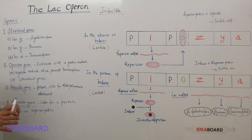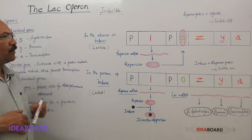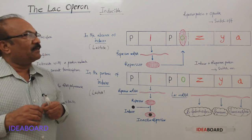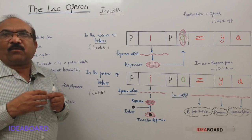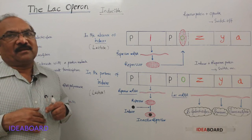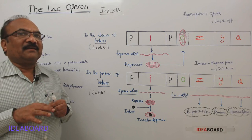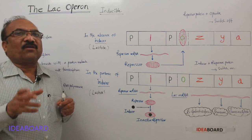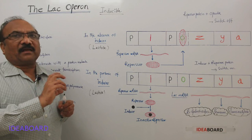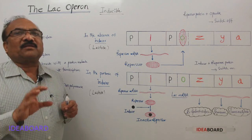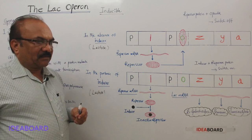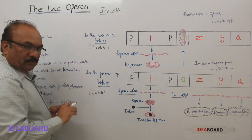When lactose is available, the lac operon will be in the switch-on position. When lactose is not available, the operon will be in the switch-off position. Lactose is the inducer that switches on the lac operon — that is why the system is called an inducible system. Now let us examine two conditions.